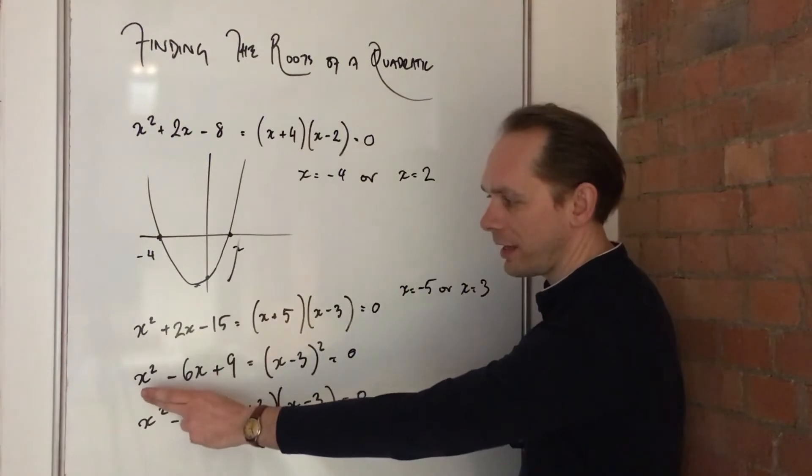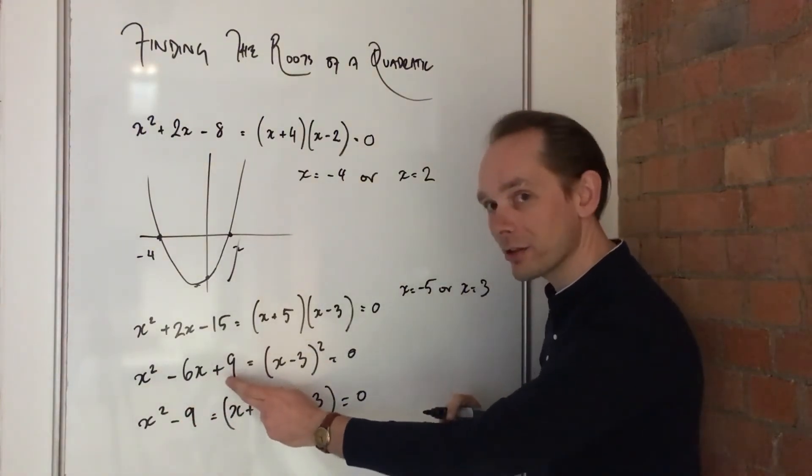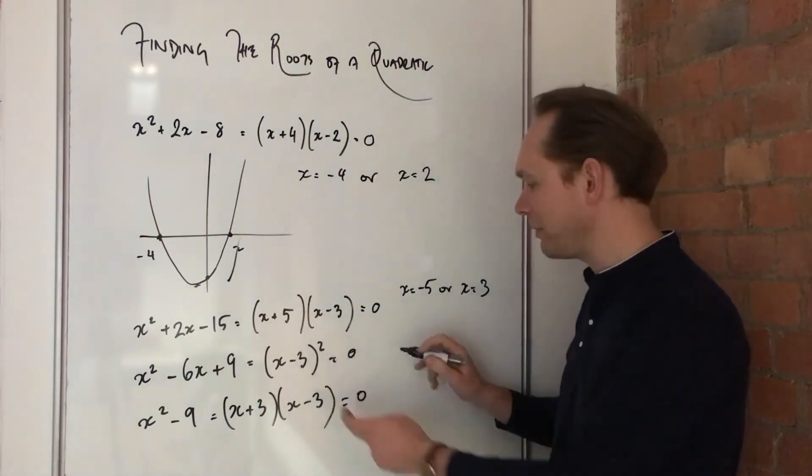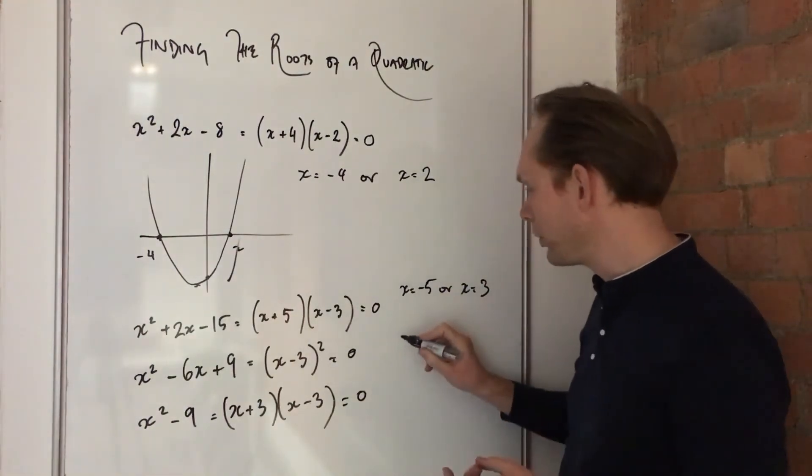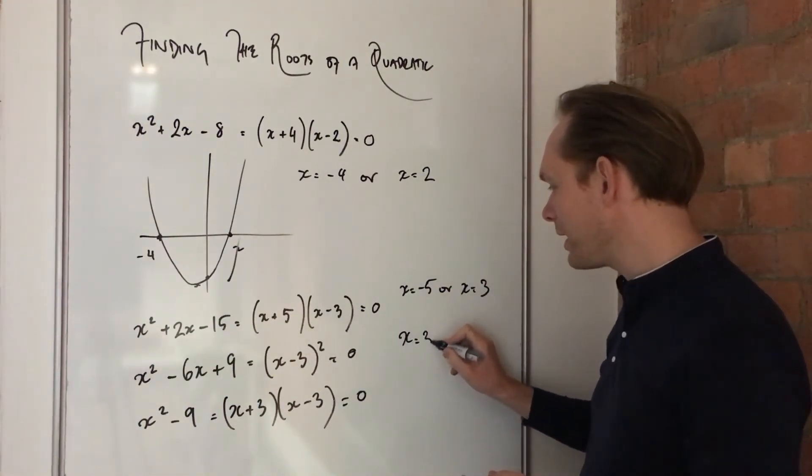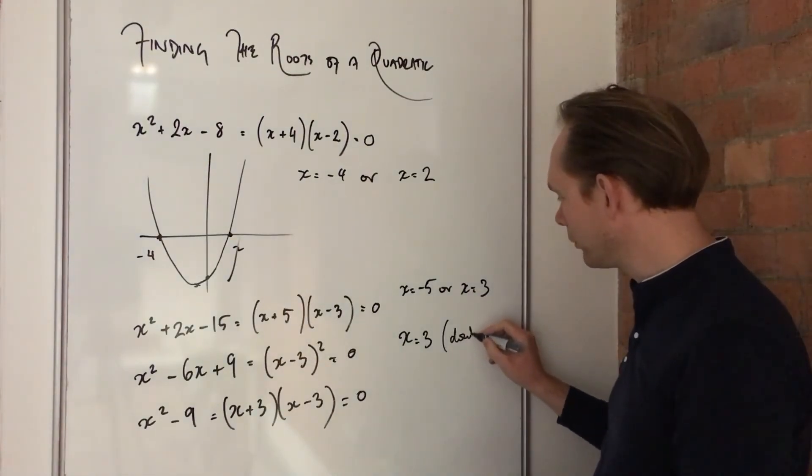In this case, x squared minus 6x plus 9 factorises to make x minus 3 all squared. It's an all-squared expansion. So that gives us a doubled root. We get x is 3 twice over. So we often write that as doubled root.